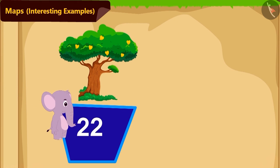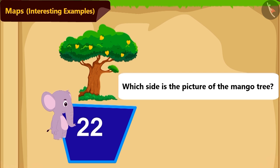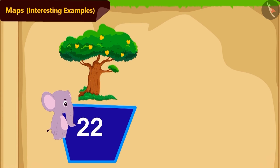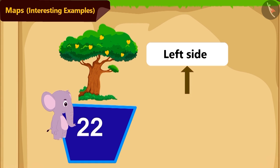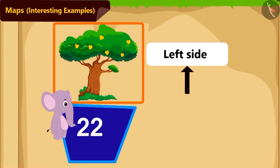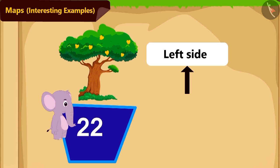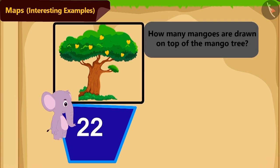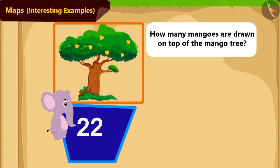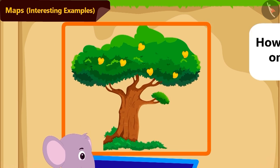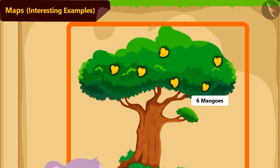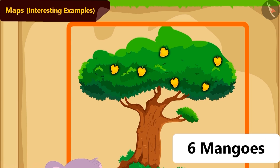Now, can you tell on which side of tile number 22 is the picture of a mango tree? Yes! The picture of a mango tree is to the left of tile number 22. And how many mangoes are painted on top of that mango tree? Absolutely right! 6 mangoes.